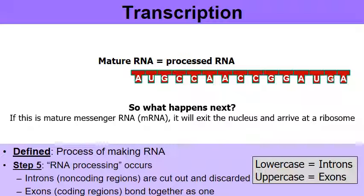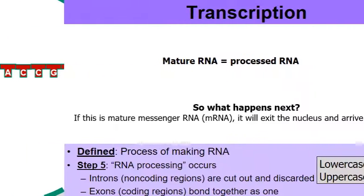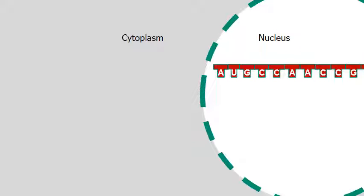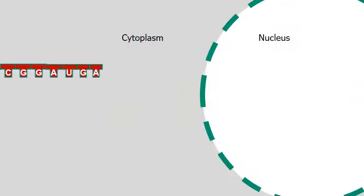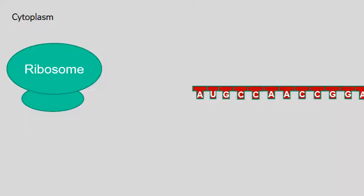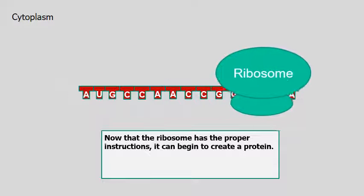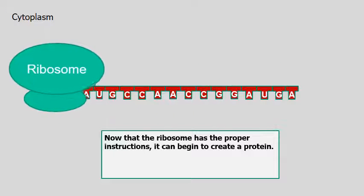If this is messenger RNA, mature messenger RNA, it's going to exit the nucleus and go find a ribosome. Here's the mature messenger RNA. It's exiting the nucleus and entering into the cytoplasm. And here's a ribosome. And here comes our mature messenger RNA.